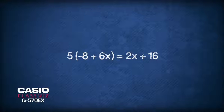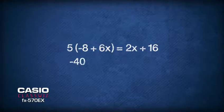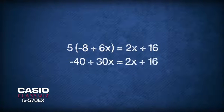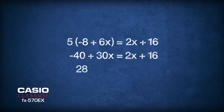Now we have an equation where the only unknown term is x. Thus, we can then use this equation to solve for x. Expanding the left-hand side of the equation gives us negative 40 plus 30x. Subtract both sides of the equation by 2x, we get 28x minus 40 equals 16.